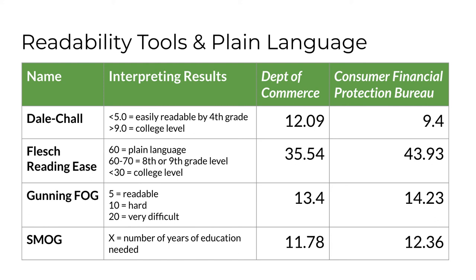So, would you like to know how the Center for Plain Language assessed these? They judged the Commerce material as lacking — needs work — I mentioned that earlier. They judged the CFPB material as exemplary. I encourage you to visit the link to the Center's Federal Report Card located on Canvas to learn more.